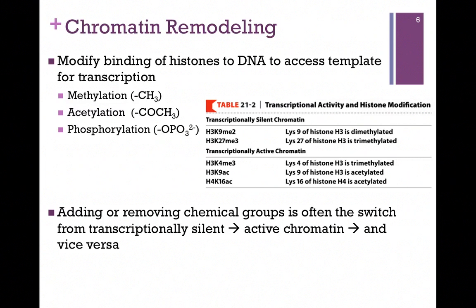We can add and remove groups to these histone proteins and therefore either strengthen the interaction with the DNA or loosen it for the purpose of separating the DNA for transcription. Commonly, we might add and remove methyl groups, acetyl groups, or phosphoryl groups. Here's a table from the book illustrating some of the changes that might take place. In some cases histones are methylated and that silences the chromatin — no transcription occurs. In other cases methylation turns it into transcriptionally active chromatin. We simply add and remove groups to either strengthen or loosen the interaction of the histones with the DNA.